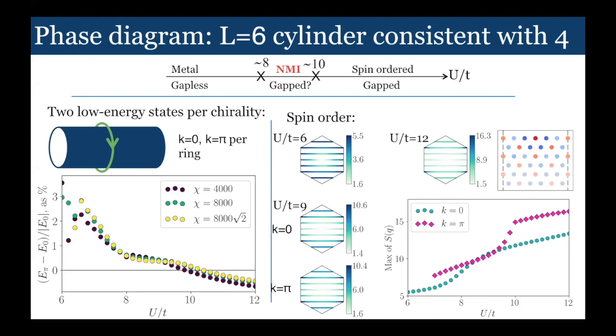The L equals six cylinder is basically consistent with the L equals four cylinder. Within about 10 percent, you see the same two phase transitions.